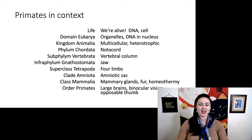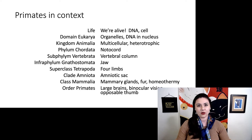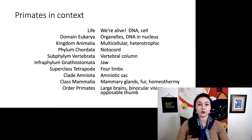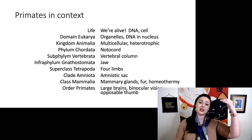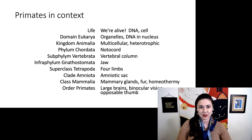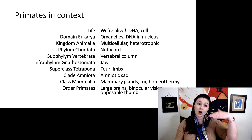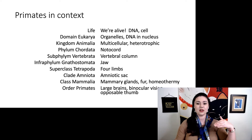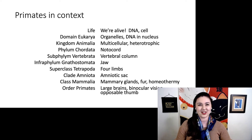And finally, we get to order Primates. That's where we have our large brains, binocular vision, and our opposable thumb. Notice that as we go down this list, the biggest group is at the top, and each level is nested within the group above it — so each group is progressively smaller and more specific. At the bottom, primates have all of these traits, while mammals have all of these traits except for the primate-specific ones.